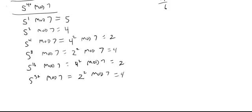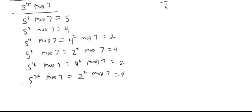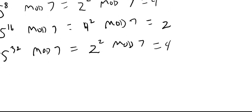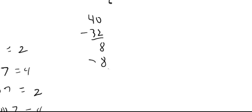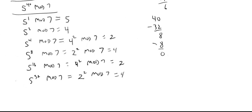So what we're going to do is multiply these together to get 5 to the 40th. When you multiply things with the same base, you add the exponents. So which of these exponents add to 40? We're going to need a 32, and that leaves 8. 8 minus 8 is 0, so we only need this one and this one. That is, 5 to the 40 is 5 to the 32 times 5 to the 8.